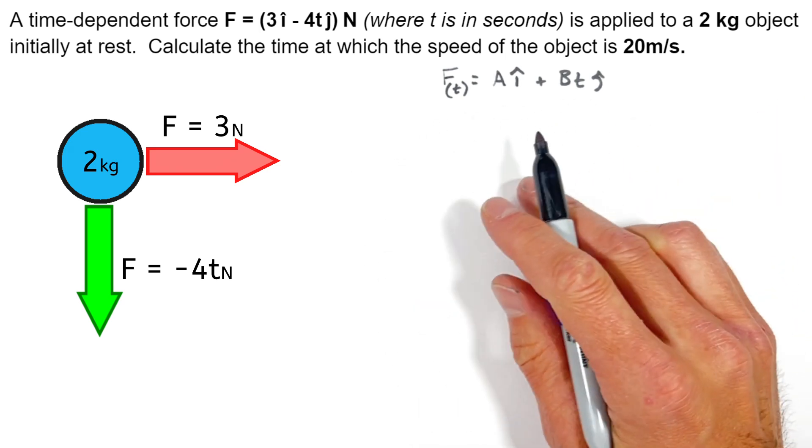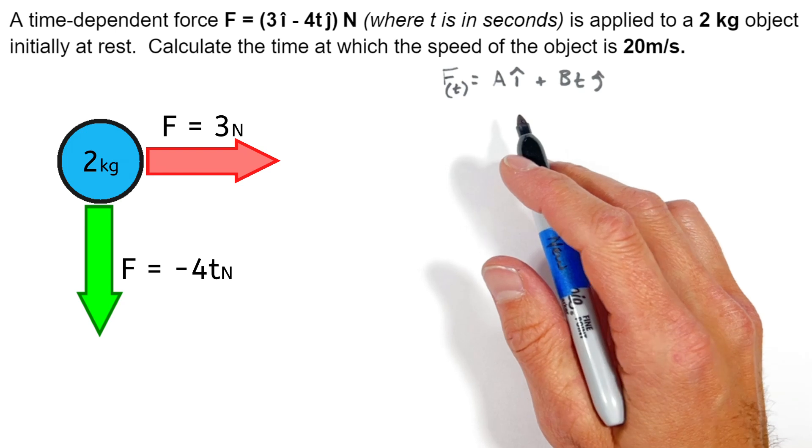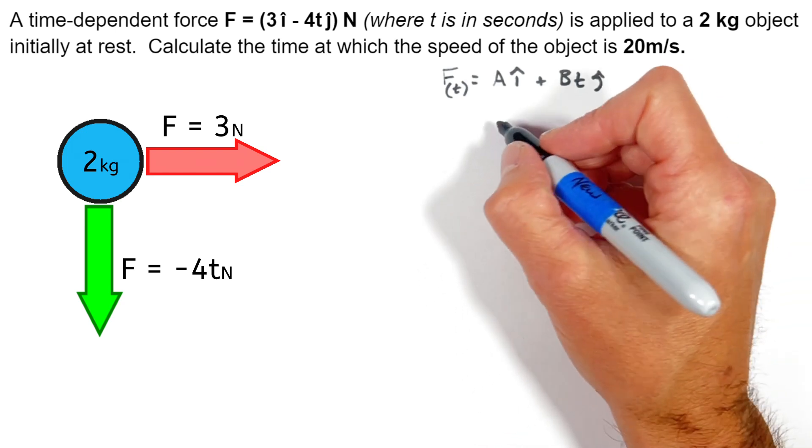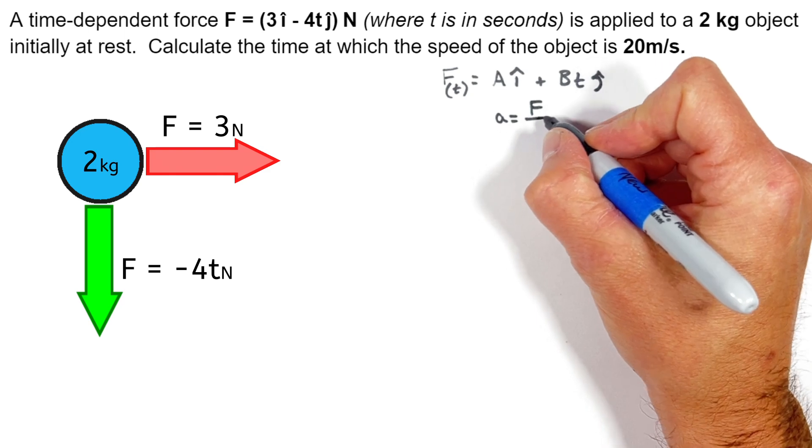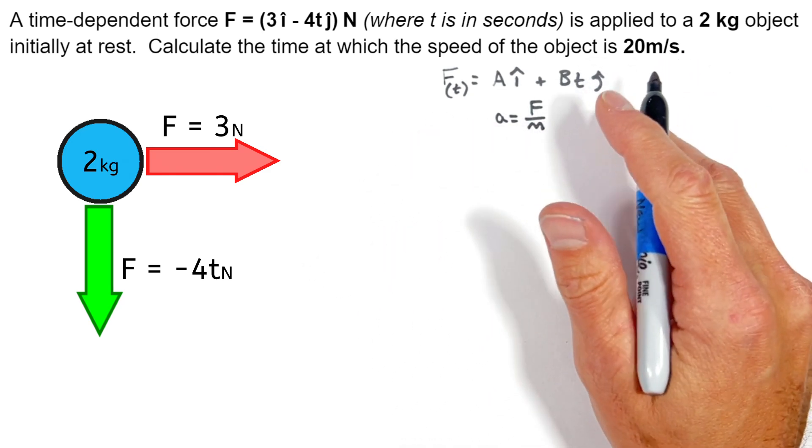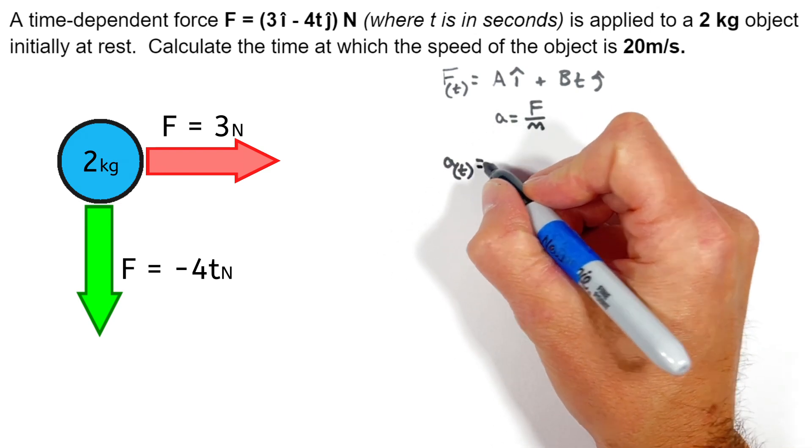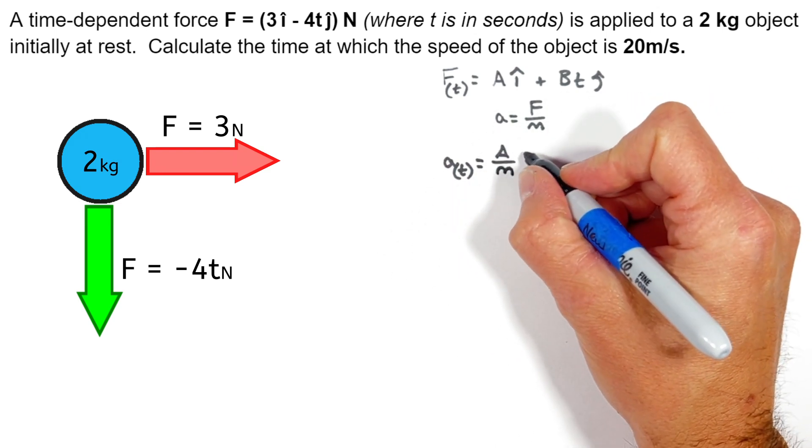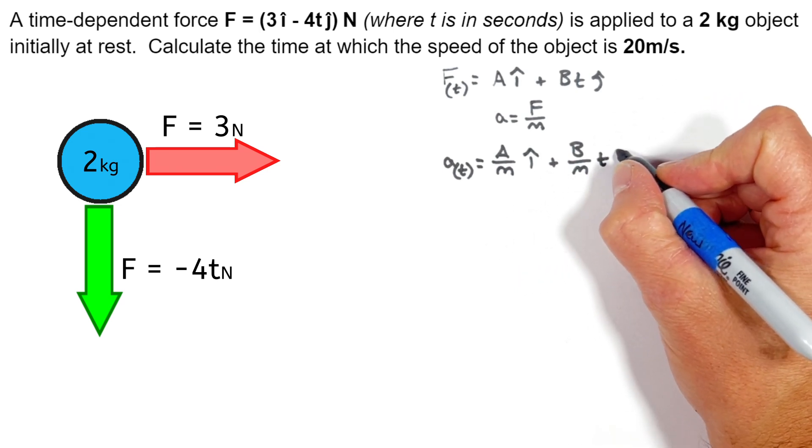Now the key here in making the jump from force to speed is using Newton's second law to get into acceleration in the kinematics. Remember, acceleration is equal to force divided by a mass. So if we take this function and divide it by our mass, which I'm just going to call m for now, we're left with the acceleration as a function of time. That's going to be a over m in the i direction, plus b over mt in the j direction.